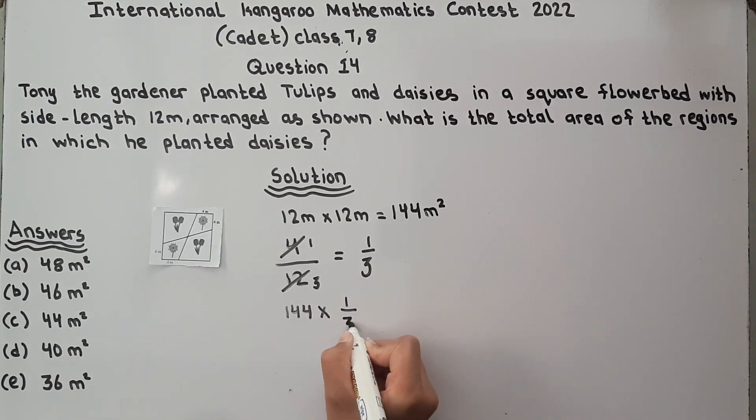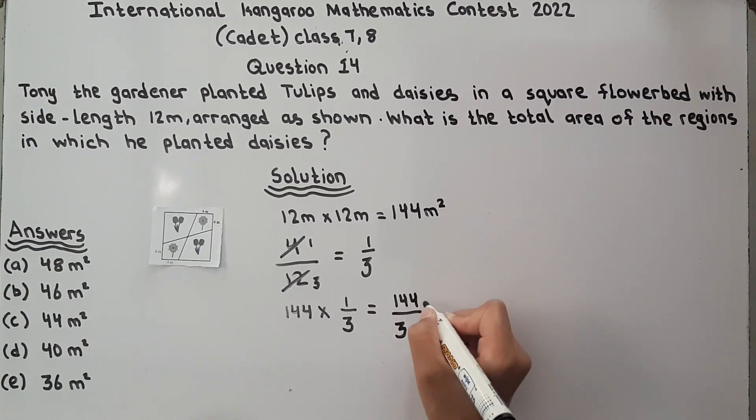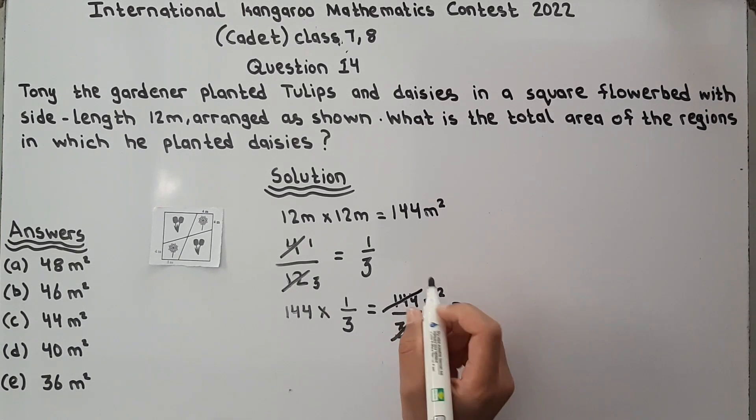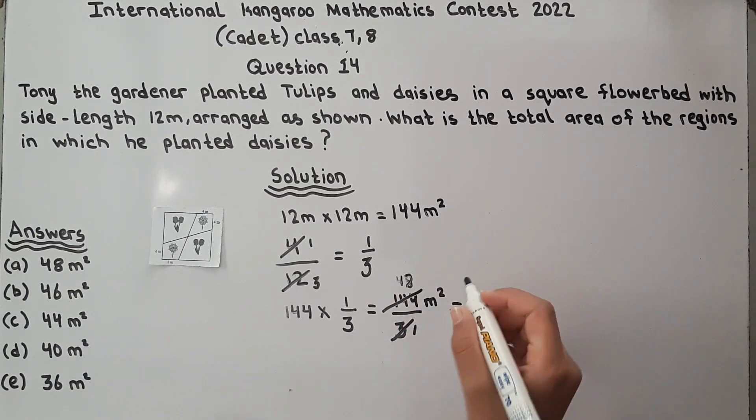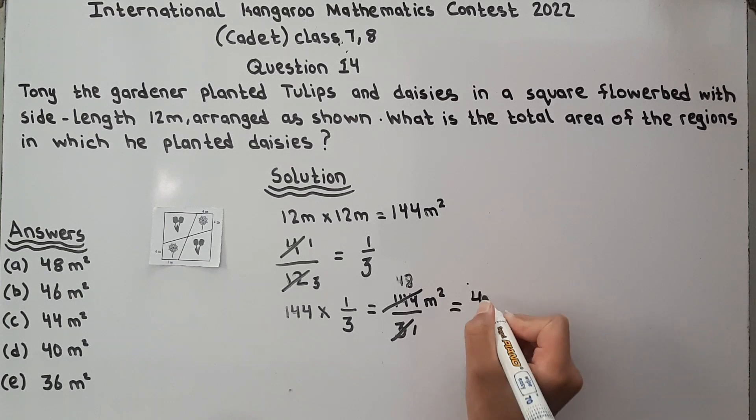It is equal to 144 divided by 3. 144 divided by 3, 24 is equal to 48 meters square.